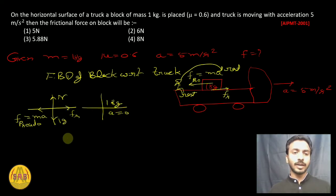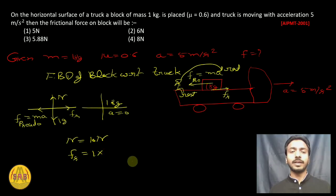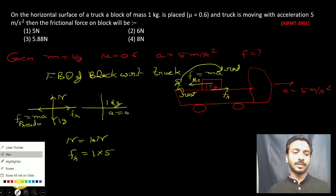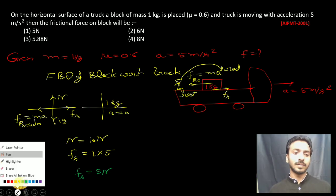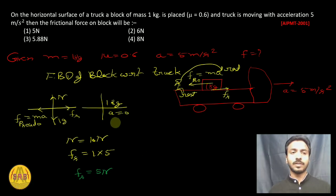So N is equal to mg, which is 10 newton. And fs will be m into a - m value is 1 and a value is 5 meter per second square, so we put 5. So this is the friction value we get - fs is 5 newton. So the option that is correct is the first one.